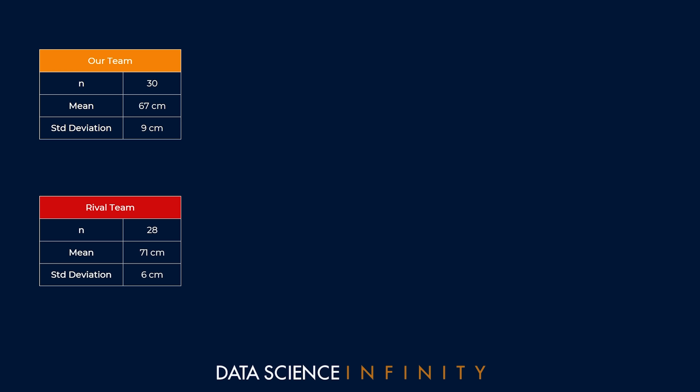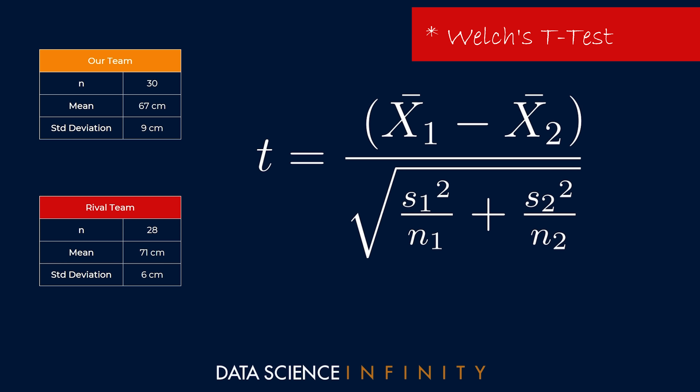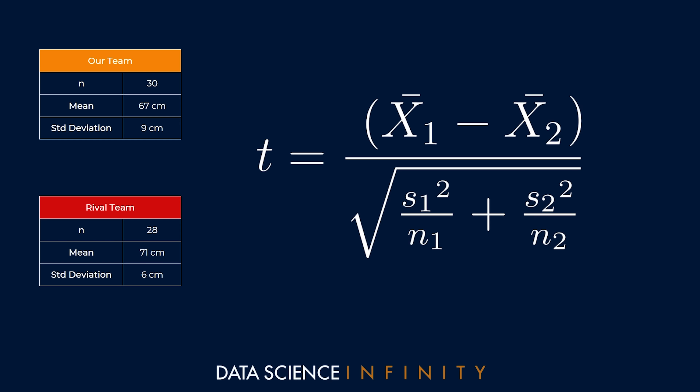To run the independent samples t-test we need this formula, which is actually for a variation known as Welch's t-test. The regular equation assumes that the variance of both samples is equal, and in most real-world cases that isn't something we can guarantee. Welch's t-test doesn't make this assumption, so it's a powerful one to know.